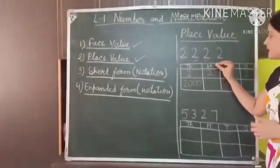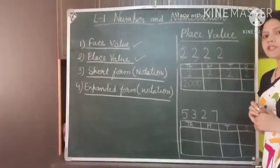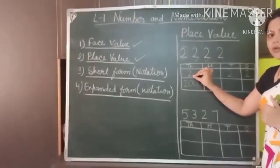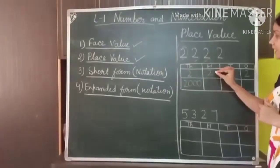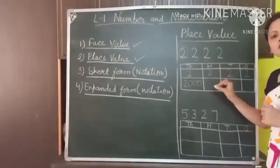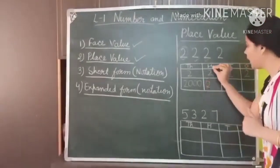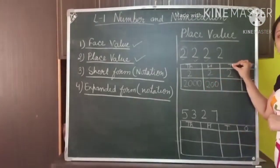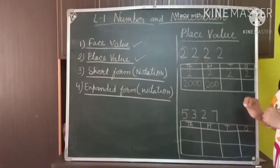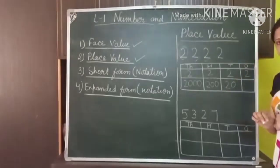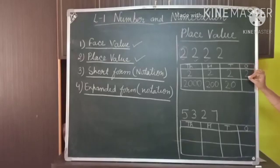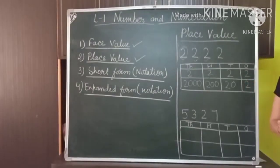This 2 is placed at the 1000's position, so the place value of this 2 is 2,000. Similarly, if this 2 is placed at the 100's position, the place value of this 2 will be 200. This 2 is placed at the tens position — 2 tens means the place value is 20. And this 2 is placed at the 1's position, so its place value is 2. So these are the place values of the different 2s in the number 2,222.